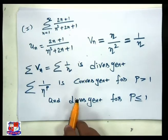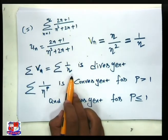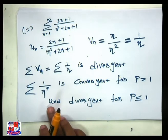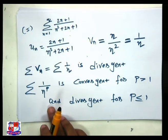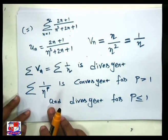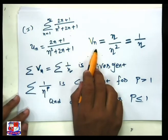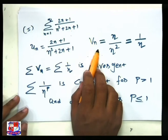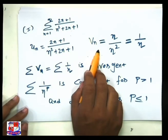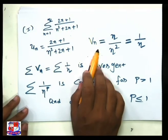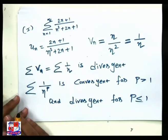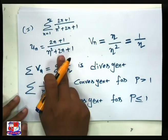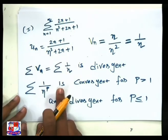Here p is equal to 1, so summation vn is divergent from this result. Now we want to find the limit of un upon vn, and if this limit is finite and nonzero, then we can say that summation un is also divergent because summation vn is divergent.